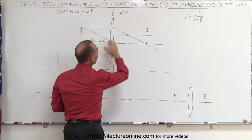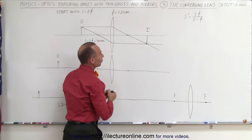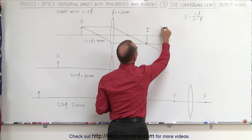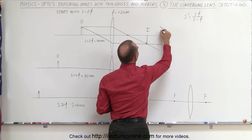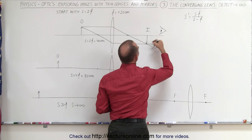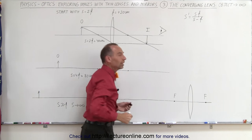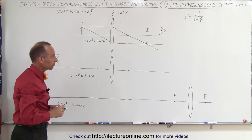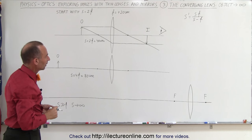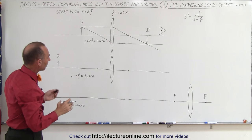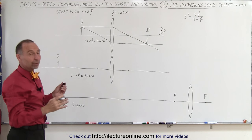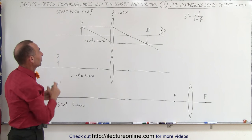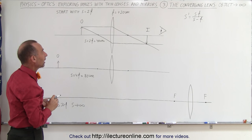The fact that the image is on the other side of the lens — the same side where the observer is — makes that a real image. Also, you can see that the image is inverted. It looks like, if I drew it right, that the image is about the same size as the object.